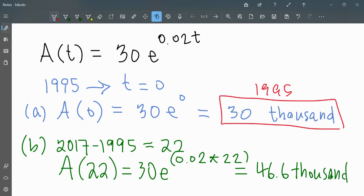That is the approximate population according to the model in the year 2017.